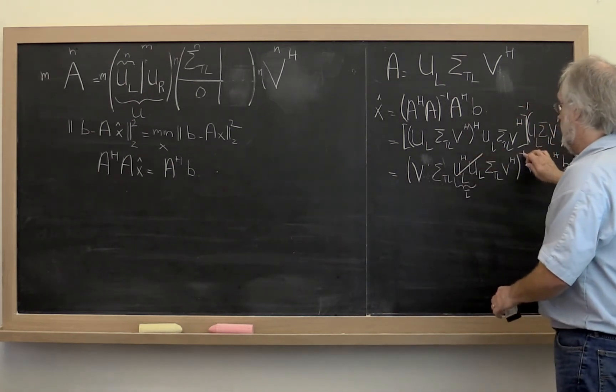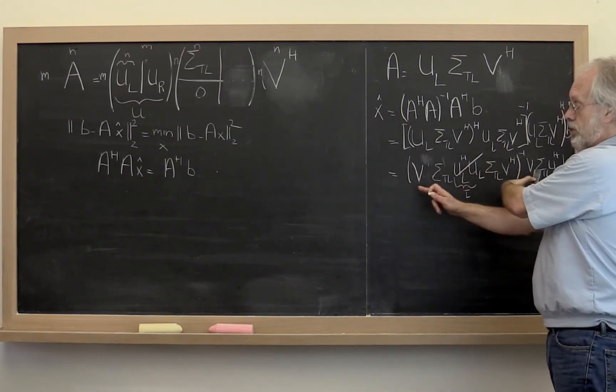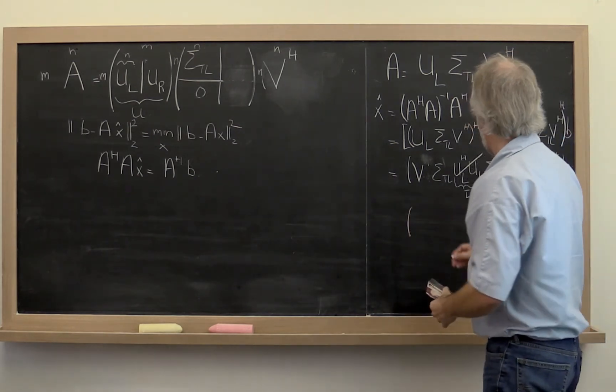If we take the inverse of the product of matrices we want to reverse the order of them and then take the inverse of each part. So let's reverse the order.